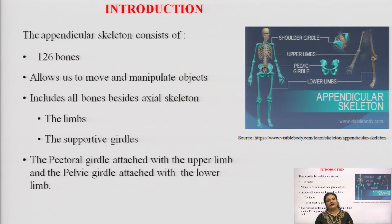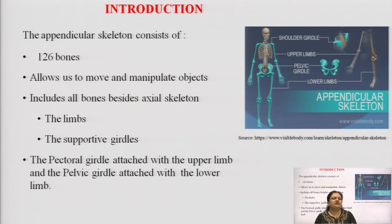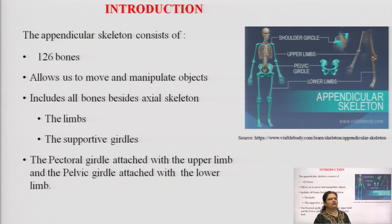The appendicular skeleton has a complete 126 bones, and these appendicular structures allow us to move and manipulate objects. I am standing here in a straight condition because of the presence of bones along with their muscles, which provide support. In today's lecture, we will discuss these appendicular bones, their functions, their locations, and all the anatomical and physiological aspects.